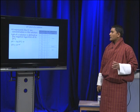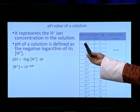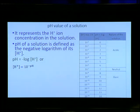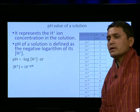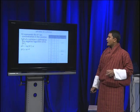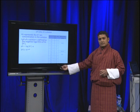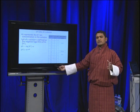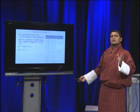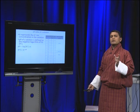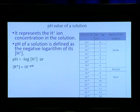This is called the pH table. If we have hydrogen ion concentration of 10 to the power minus 0, its pH becomes 0. If we have 10 to the power minus 1, our pH becomes 1. Likewise, we have pH from 0 to 14. The ionic product of water is 10 to the power minus 14. For neutral water, the concentration of H+ ion and OH- ion both become 10 to the power minus 7, giving a pH of 7. We say the water is neutral.